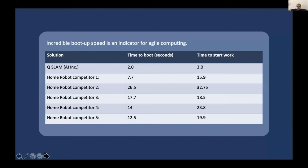For home robots, which we did the comparisons on, our agility is much better than competitors. We actually boot up in two seconds and start working in three seconds. The best competitor takes 7.7 seconds just to boot up and another 7 to 8 seconds to start working — to get the peripherals up and running. The worst one takes about 30 seconds.